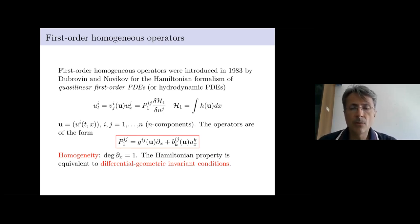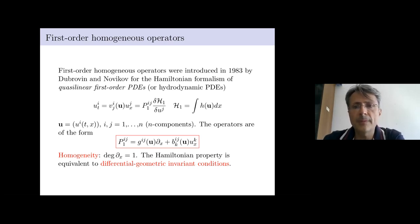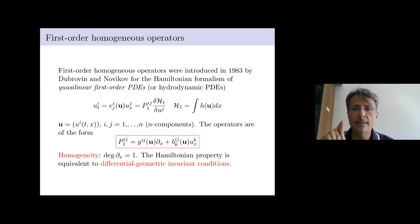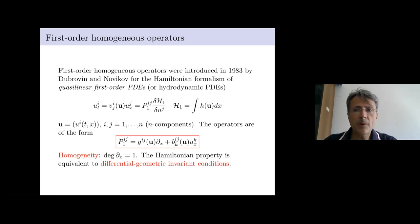Why consider such operators? Because there are examples from Euler fluid dynamics, observed first by Novikov. The Hamiltonian property of such operators is nice under the differential geometric viewpoint: if you do a change of coordinates, the form of the quasi-linear first-order system is preserved, as is the form of the homogeneous Hamiltonian operator and the Hamiltonian H1. Everything behaves geometrically. Moreover, the properties by which P1 defines a Poisson bracket are geometrically invariant and can be expressed by tensor conditions.